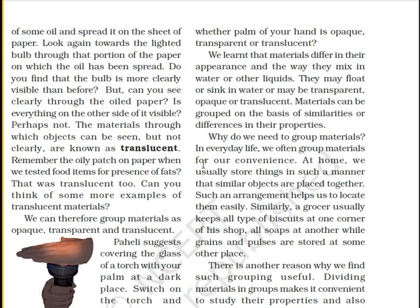We learn that materials differ in their appearance and the way they mix in water or other liquids. They may float or sink in water, or may be transparent, opaque, or translucent. Materials can be grouped on the basis of similarities or differences in their properties — objects that sink, objects that float, objects that are transparent, translucent, or opaque.